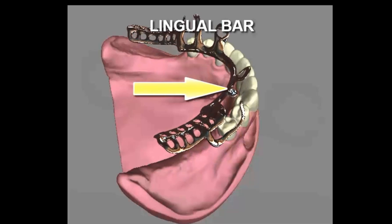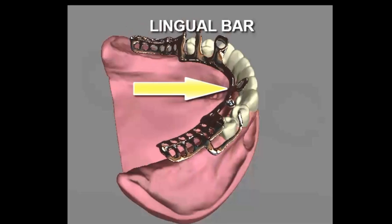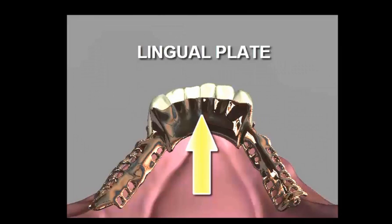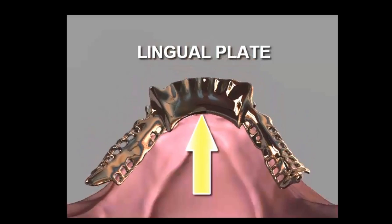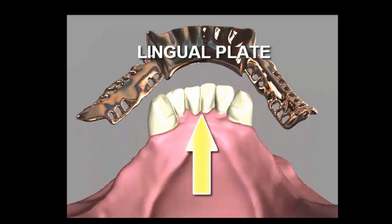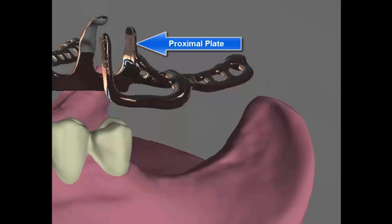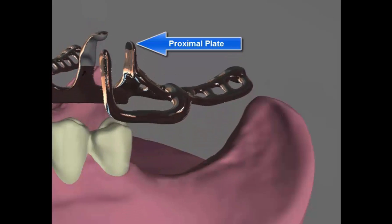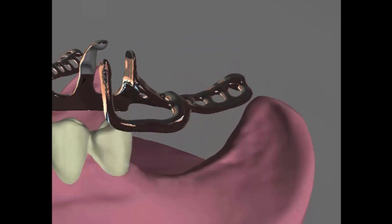A lingual bar, and then the next most common type of major connector in the mandible, is a lingual plate. You can show the component and the contours on the teeth that were created to support that, as well as the proximal plate for an eye bar clasp assembly.